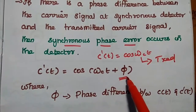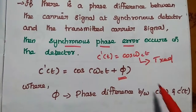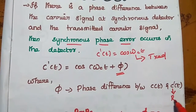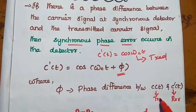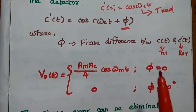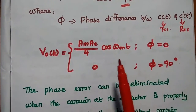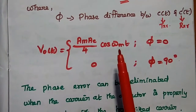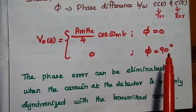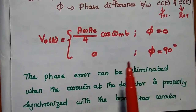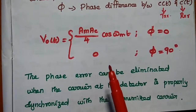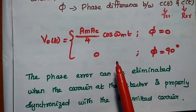Suppose there is a phase difference φ between C(t) at the transmitter side and C'(t) at the receiver side. If this phase difference is equal to 0, then we can get the modulating output correctly with no difference. However, if the phase difference is 90 degrees, then there is no output at all. This is the major problem in synchronous detector, so we have to be very careful to select the carrier signal.